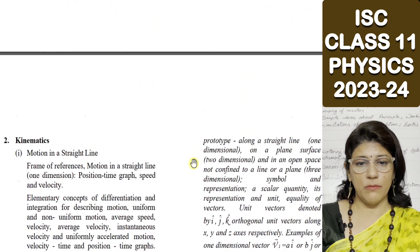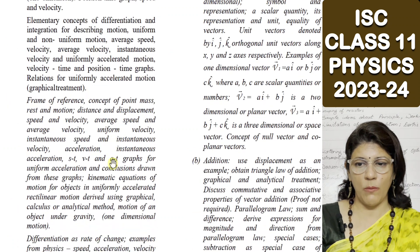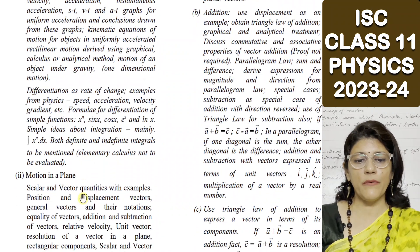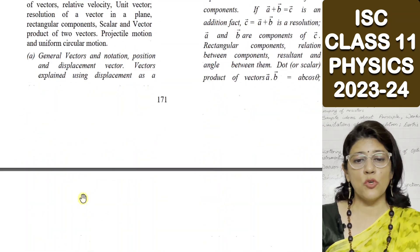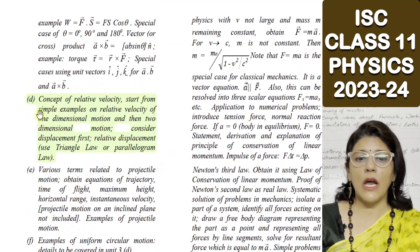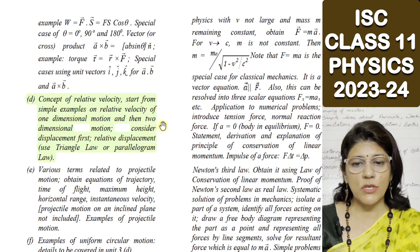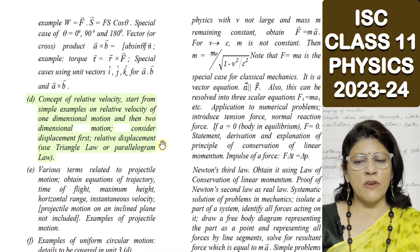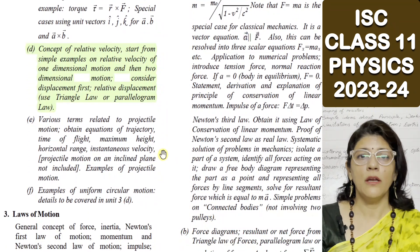The second unit is Kinematics. There is no major change here, except one topic that has been cut: sub-topic D, Concept of Relative Velocity. This includes starting from simple examples of relative velocity of one-dimensional motion and then two-dimensional motion, relative displacement using triangle law or parallelogram law — this entire topic has been deleted.